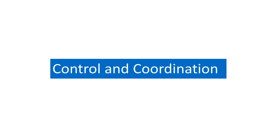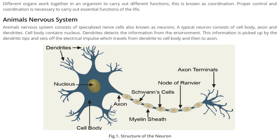Control and coordination. Living organisms have different organs, and all organs have different functions. They should work in cooperation and coordination. When they work together to make life possible, this is known as coordination. Proper control and coordination is very much necessary to carry out the essential functions of a living being.